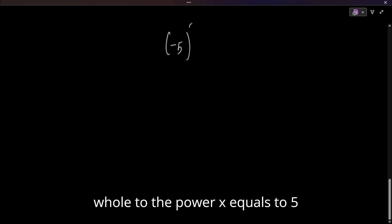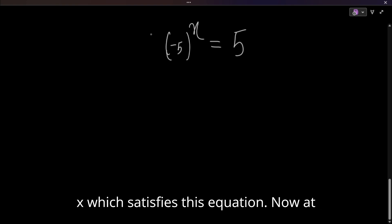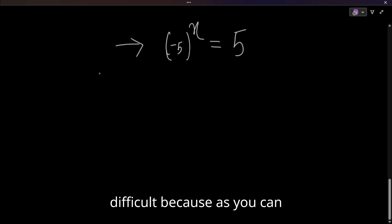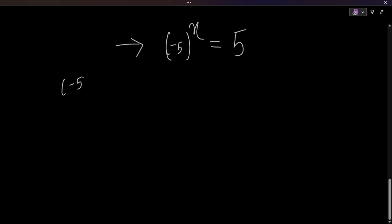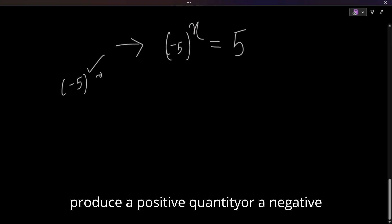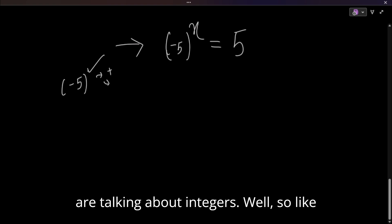Hello everyone. In this video we are going to solve the problem from Harvard University: (-5)^x = 5, and we are to solve for the real numbers x which satisfy the equation. At first glance this looks very difficult, because minus 5 to the power of something could produce a positive or negative quantity depending on the exponent, if you are talking about integers.